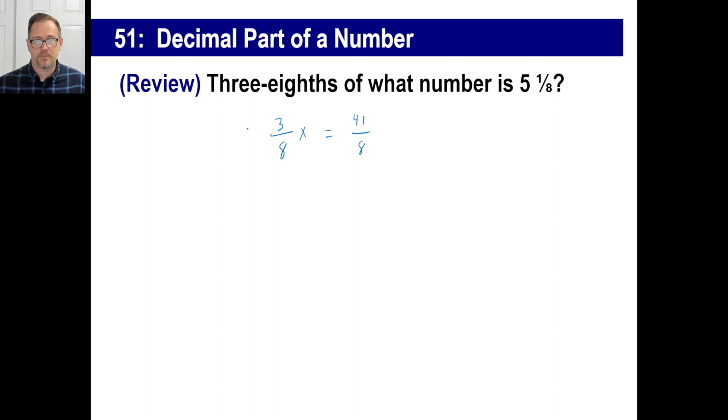All you need to do now is multiply by the reciprocal. That's eight over three times eight over three. Yup, done. And then the eighths cancel and then you got 41 over three. There you go.